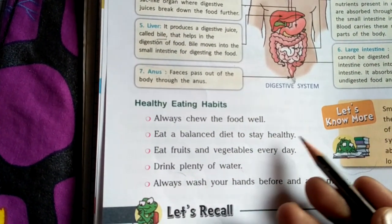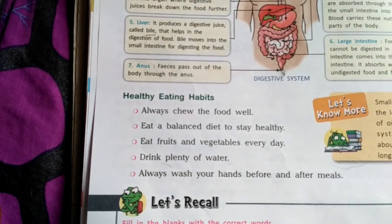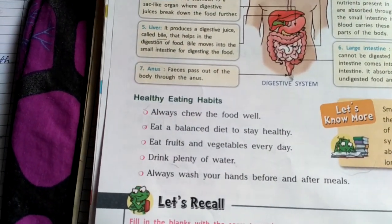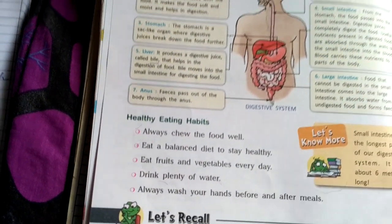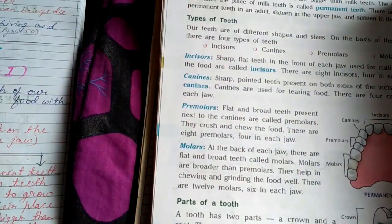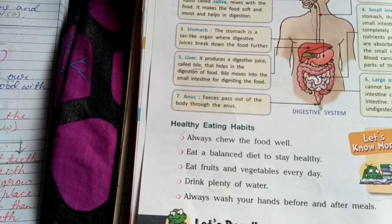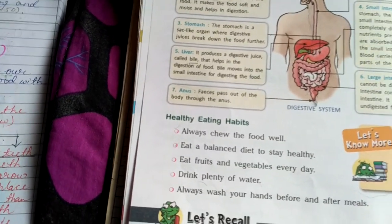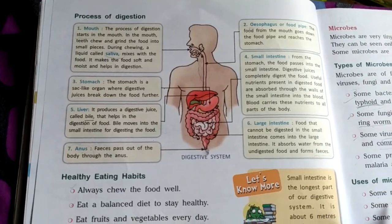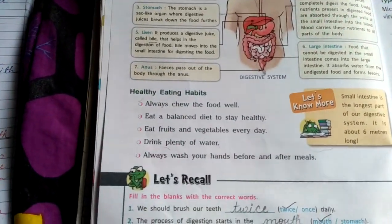We studied certain healthy eating habits: always chew the food well, eat a balanced diet to stay healthy, eat fruits and vegetables every day, drink plenty of water, and always wash your hands before and after meals. In one of the revision videos, I will also make a video doing reading of the chapter — reading of the sentences of the lesson — and you should listen very carefully in that session.